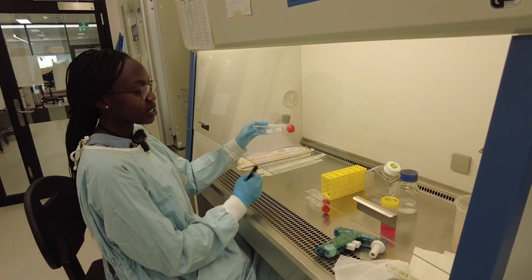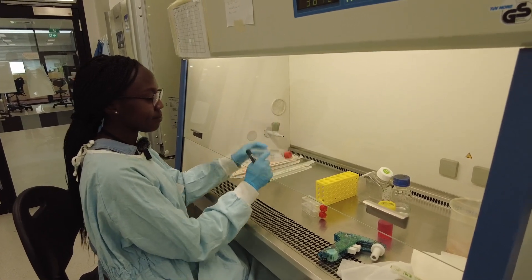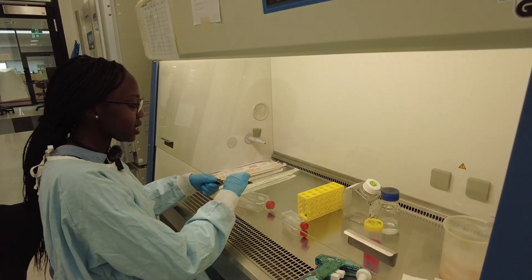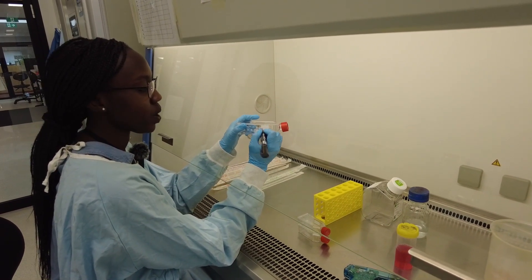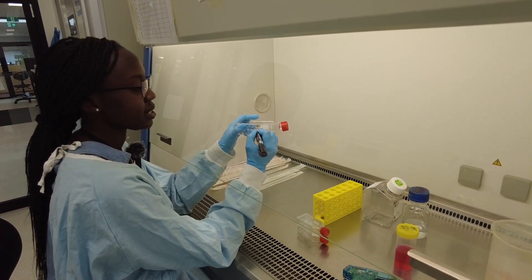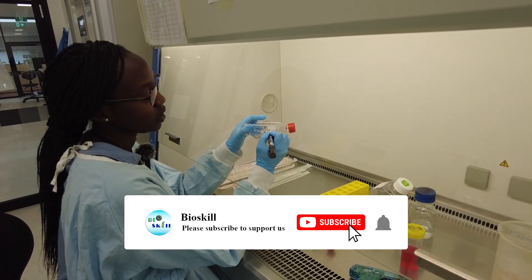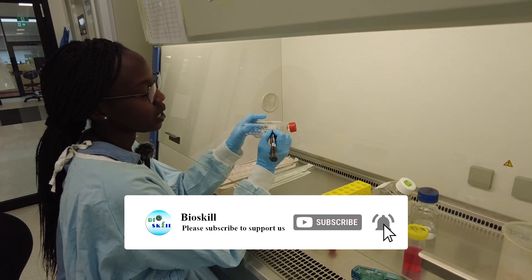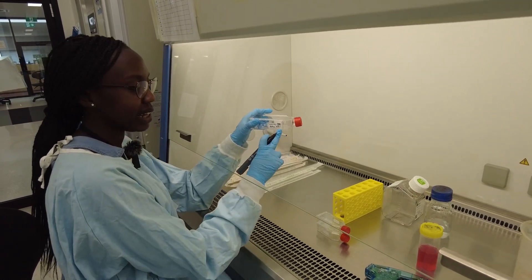So it's important for us to label on the flask what's going inside, the date and our name. So I'm going to label each flask with the name of the cell line. It's called CCD841. Today's date is the 26th of September with my initial and we're going to call this one Passage 3 or the third time we're splitting the cells.